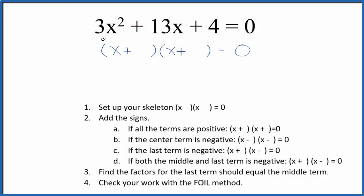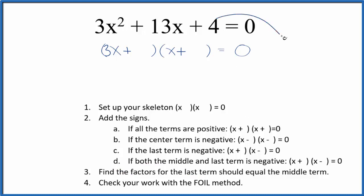Because we have the 3 here, let's put a 3 in front of this one. When looking for factors, normally we look at the last term — this 4 — find the factors of 4, and they'll equal the middle term. But this 3 makes it so we can't do it that way. So let's look at the factors of 4: 1 times 4 and 2 times 2. I'm going to systematically put these in until the whole thing adds up to 13x.